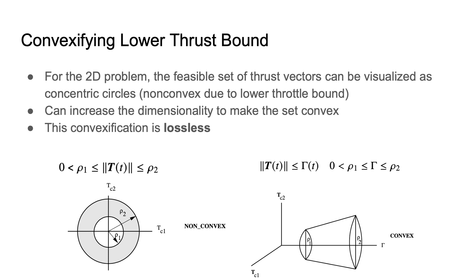This set can be convexified by introducing a slack variable, gamma, which takes this inner circle and extrudes it in the out-of-plane direction to create this truncated cone that you can see on the right. This new set is now convex. It has also been proved that this convexification is lossless, meaning that a solution to this now-convex problem guarantees a solution to the original non-convex problem. This allows us to just solve the convex problem.